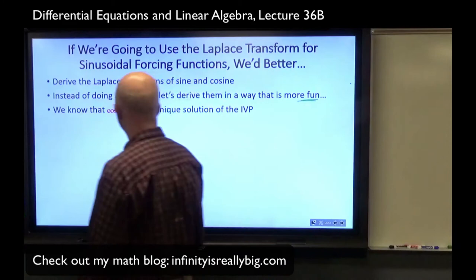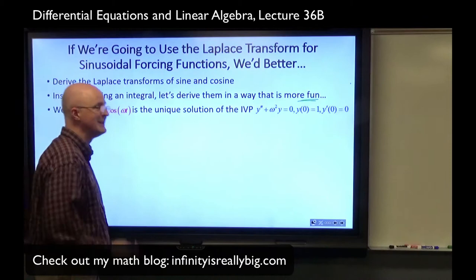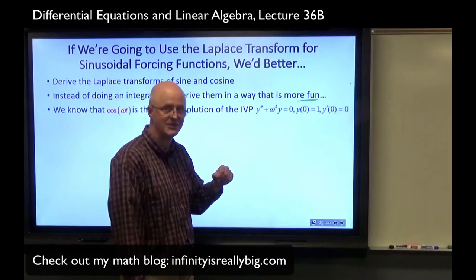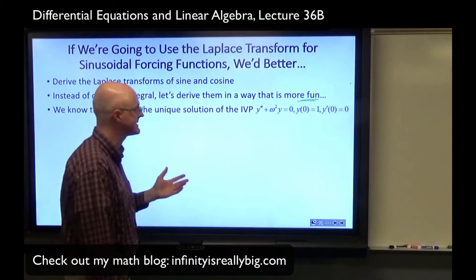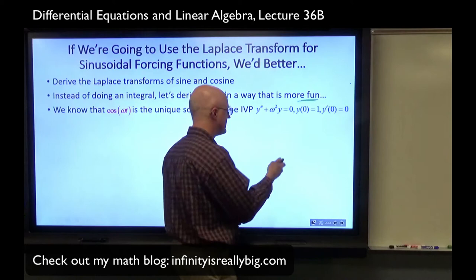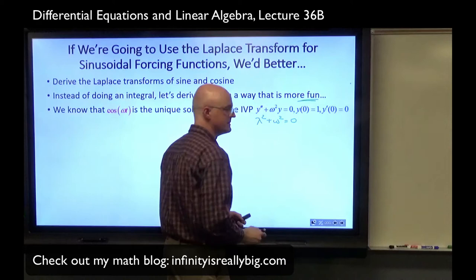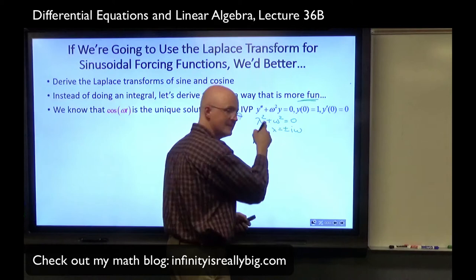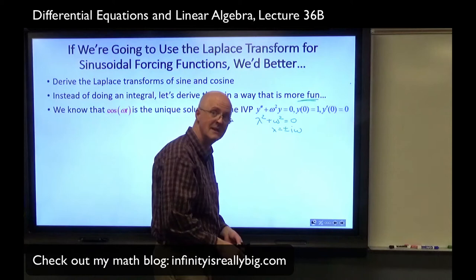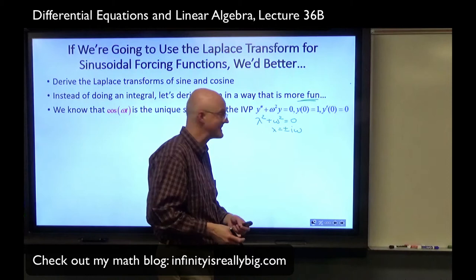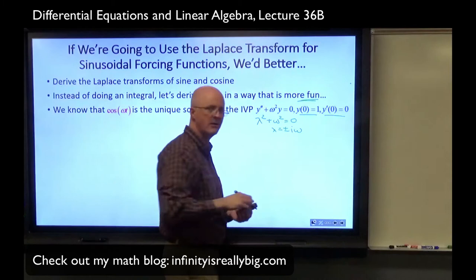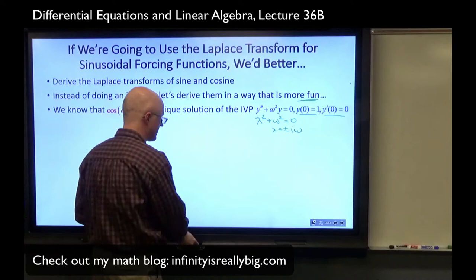We know that cosine of ωt is the unique solution of a certain initial value problem. The corresponding equation in terms of the eigenvalues λ would be λ² + ω² = 0, so λ would be ±iω — purely imaginary eigenvalues. So you're only going to have cosines and sines as solutions, with no exponential decay. Since y(0) = 1, we start at the peak, and y'(0) = 0, we start with zero slope. It must be cosine ωt that is the solution.